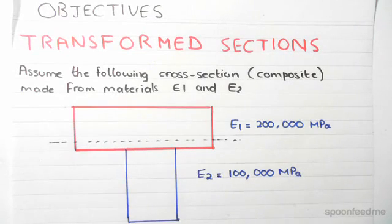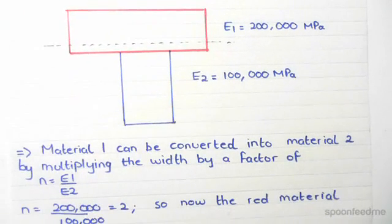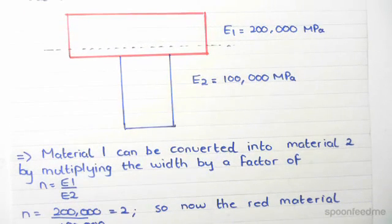We can convert material 1, which is the red one, into material 2 by multiplying the width by a factor of the modular ratio, which is n equals E1 divided by E2. So to convert into material 2, we divide elastic modulus of 1 by 2, which gives us 200,000 over 100,000.